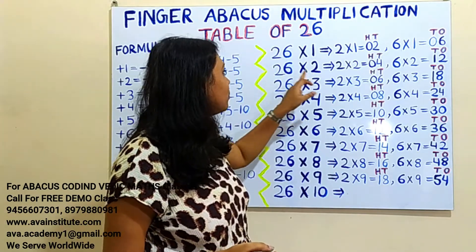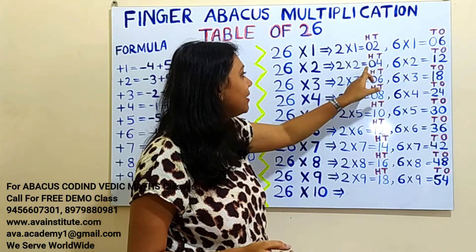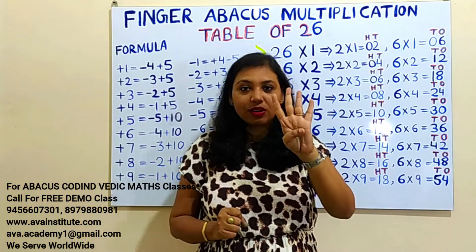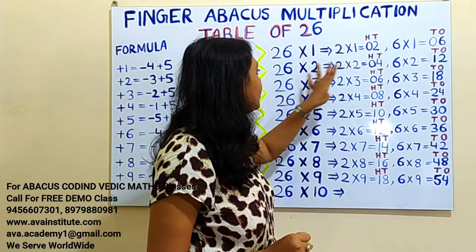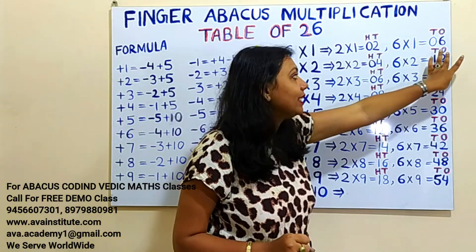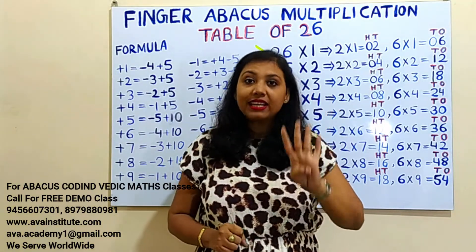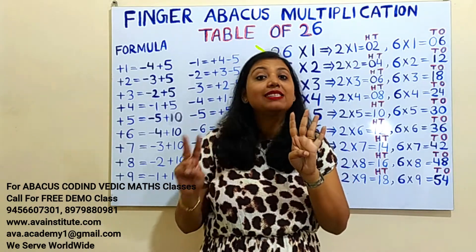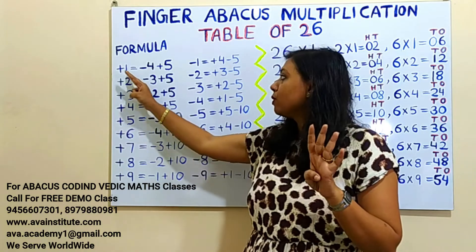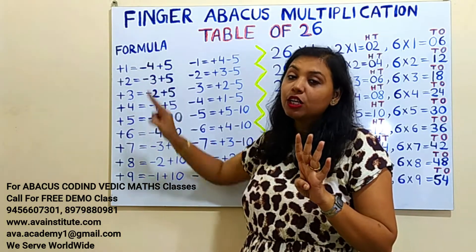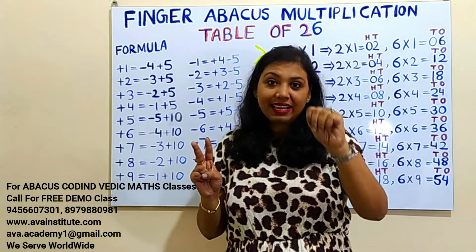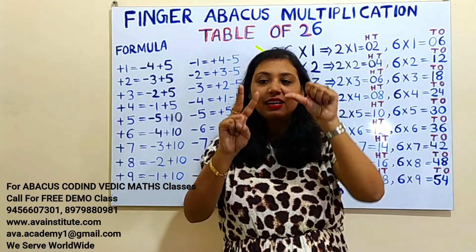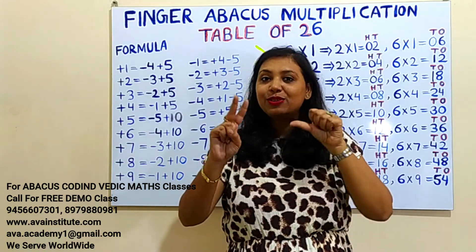26 twos are: 2 twos are 4 — in hundreds 0, in tens 0, in ones 4. Now 6 twos are 12 — in tens 1, in ones 2. We can add 2 easily. How to add 1 in the tens space? That means 10. The plus 1 formula is 10 minus 4 plus 5, so the plus 10 formula is minus 40 plus 50. So the answer is 52.